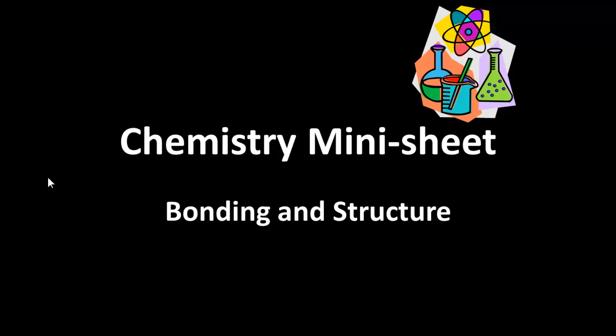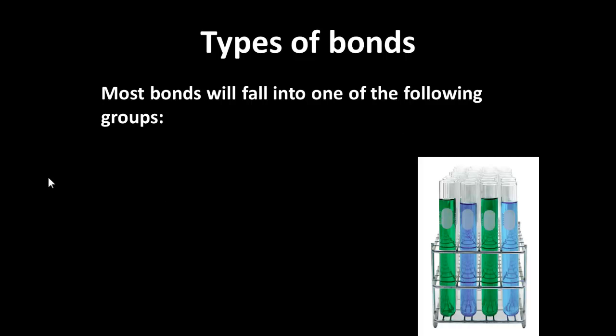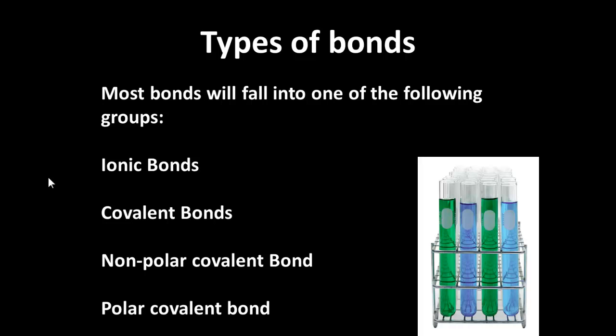In this short podcast, we are going to take a look at bonding and structure. There are a number of different types of bonds, and these are the common groups that you will find referred to: ionic bonds, covalent bonds, and covalent bonds may be non-polar covalent bonds or polar covalent bonds. So what do all these terms mean?